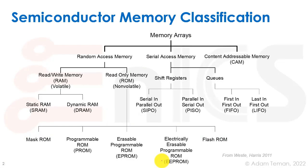Going back to this memory classification, all memory arrays can be divided in several different ways. On the left side we have random access memories, in the middle serial access memories, and on the right content-addressable memories. We won't be discussing serial access or content-addressable memories in this course. For random access memories we traditionally divide it into read-write memory and read-only memory.